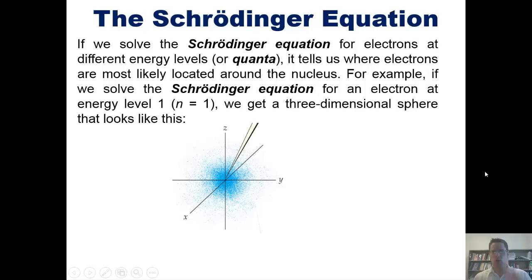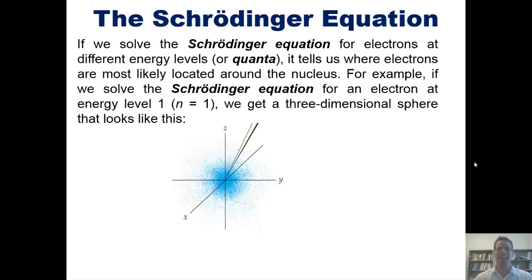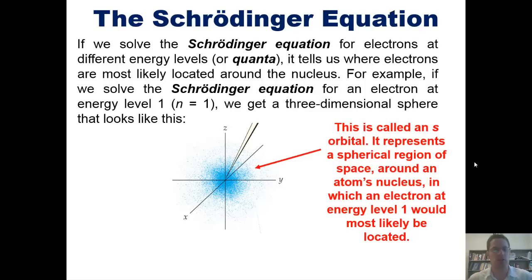That sphere, which is once again the location around the nucleus, if you can imagine the nucleus being right at the center of where these three axes cross each other, that sphere around it represents all the probable locations in which an electron will be found. That sphere happens to be called an s-orbital. Once again, it represents the spherical location of space around the atom's nucleus in which an electron at energy level 1, or n equals 1, would most likely be found.